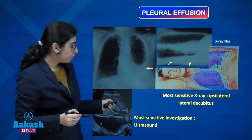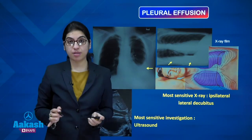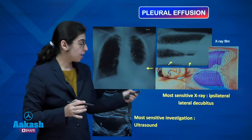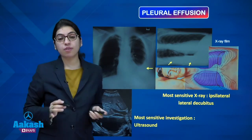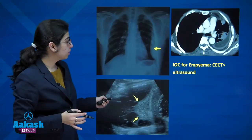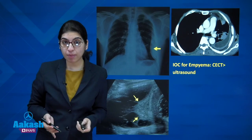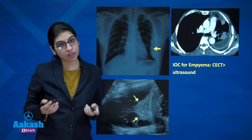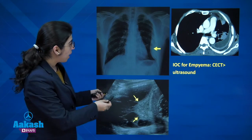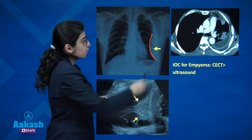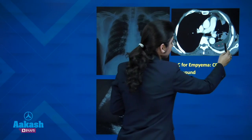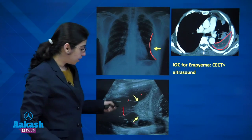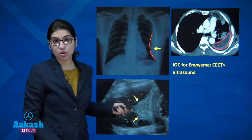For pleural effusion, the most sensitive X-ray view is the ipsilateral lateral decubitus. The more sensitive overall investigation is ultrasound. The investigation of choice for empyema is contrast-enhanced CT. On imaging, empyema shows loculated pleural effusion with hypodense fluid, thickened visceral and parietal pleura, a crescent sign, and septa with debris on ultrasound.